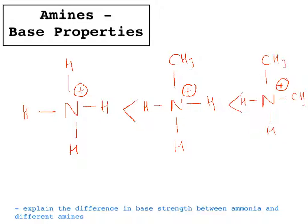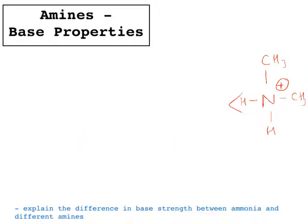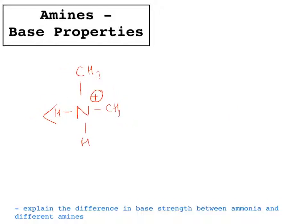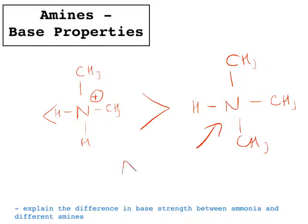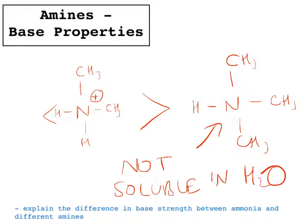However, a tertiary amine that has accepted a proton is not more stable than a secondary amine, even though it has an extra methyl group and therefore more positive inductive effect. The reason is that a tertiary amine is insoluble in water, which is where it would be accepting that proton. So a secondary amine that's accepted a proton is more stable than a tertiary amine with three CH₃ groups, because the tertiary amine is not soluble in water.